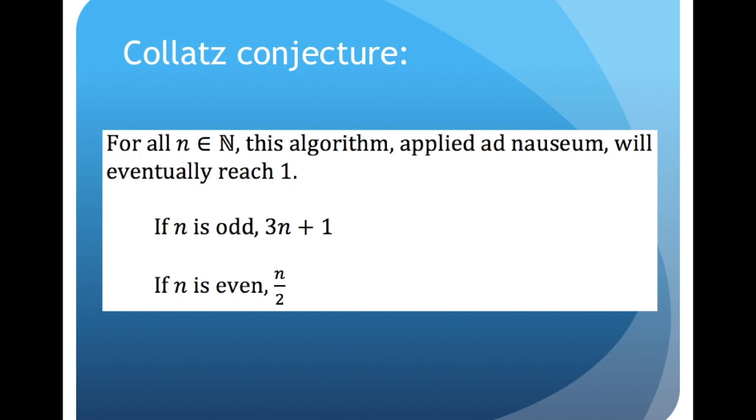The Collatz conjecture is the statement that for all natural numbers, if you apply the following algorithm ad nauseum, you're eventually going to reach 1. And that algorithm is, if it's odd, you triple it and add 1. If it's even, you divide it in half, and you just keep applying that to the succeeding numbers until you eventually get 1.